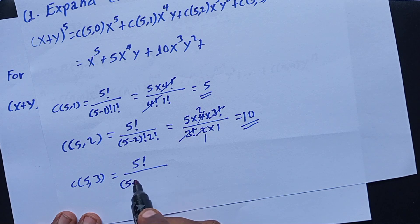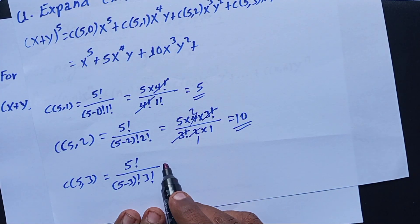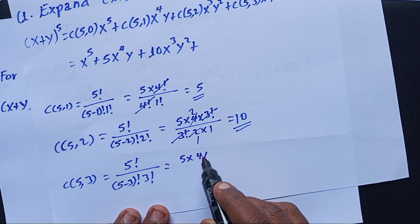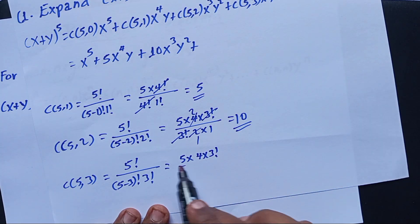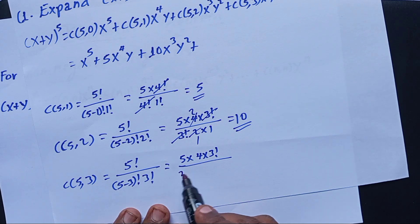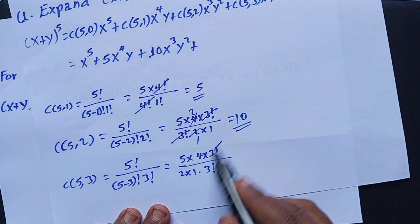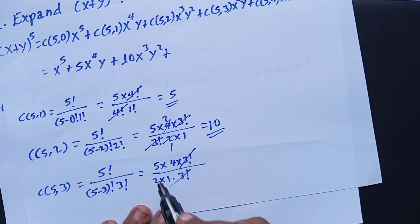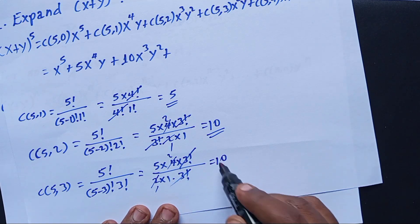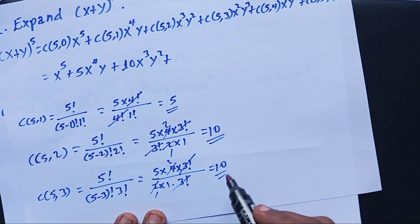Now for C(5,3): 5! over (5-3)! times 3! equals 5 times 4 times 3! over 2! times 3!. The 3! cancels, leaving 5 times 4 over 2 times 1, which equals 10. So the coefficient of x^2 y^3 is 10, giving us 10x^2 y^3.